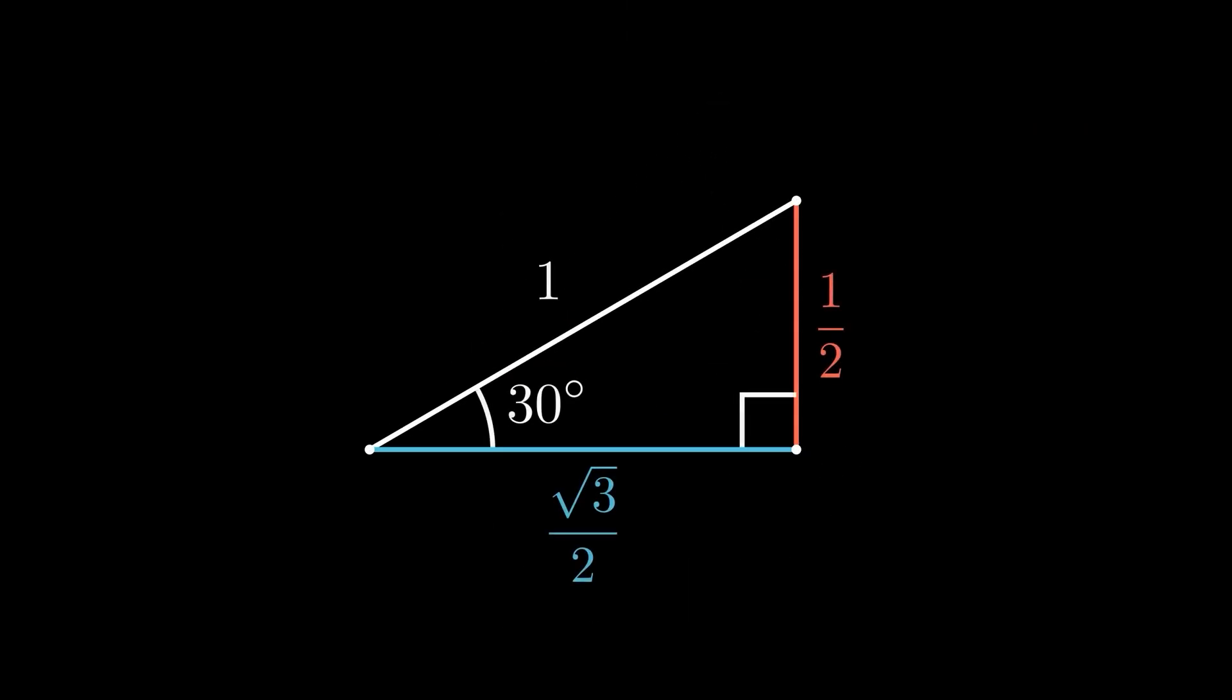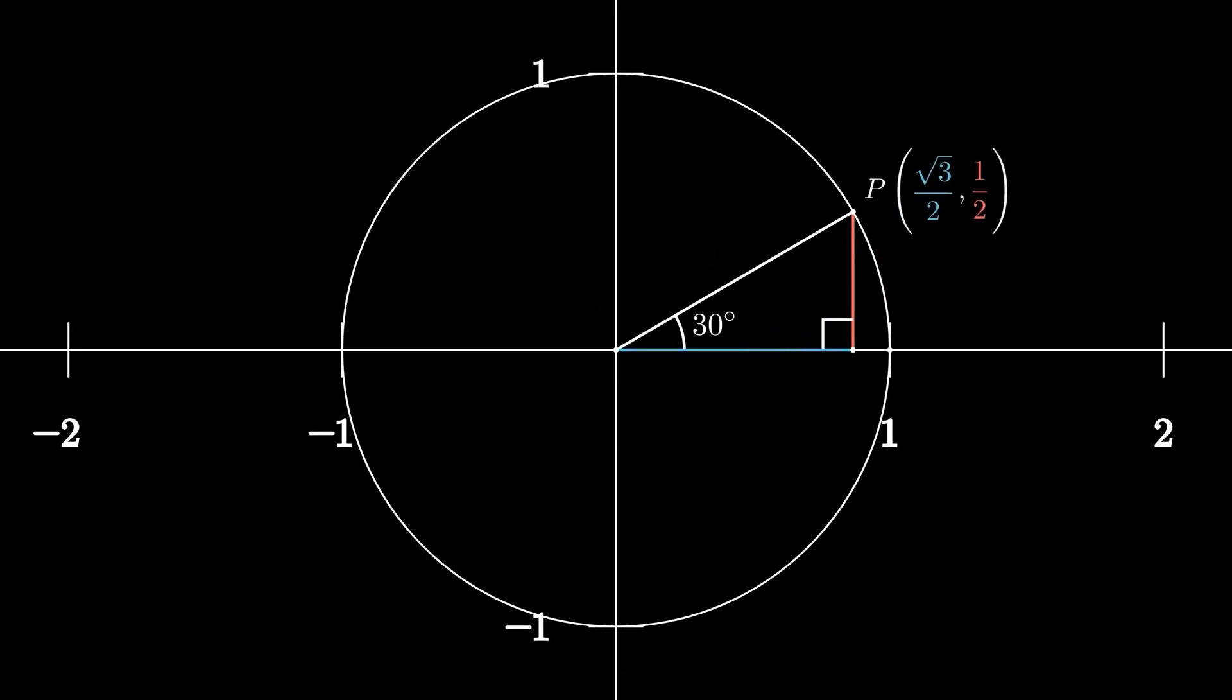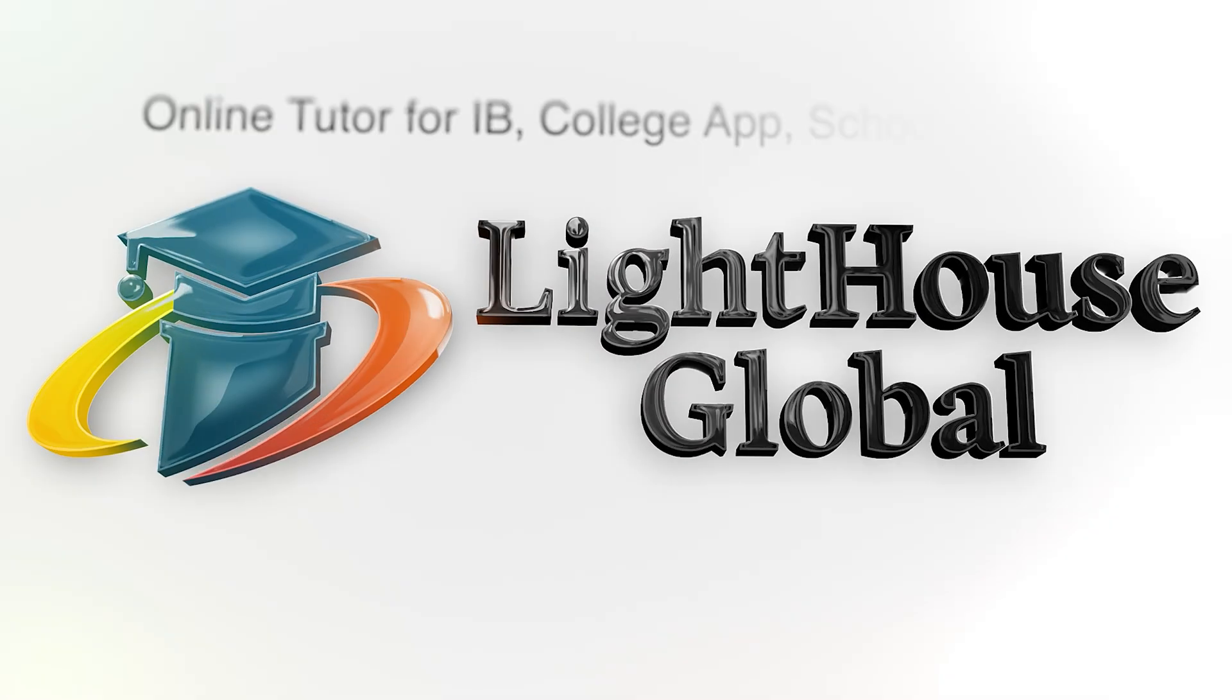So next time when you hear sine or cosine, think of them as x and y coordinates on the unit circle, defining angles beyond just right triangles.